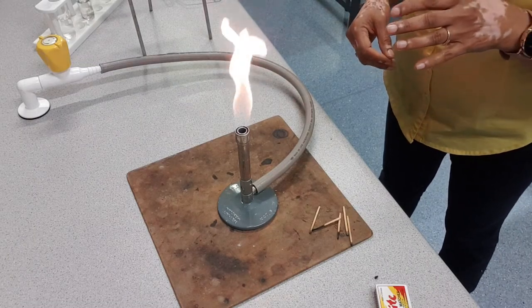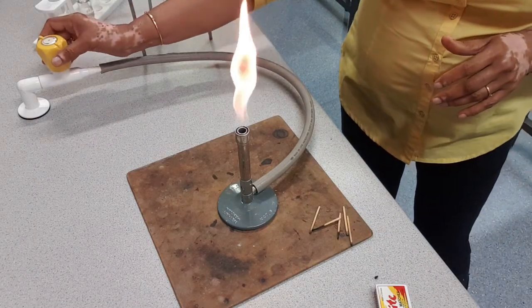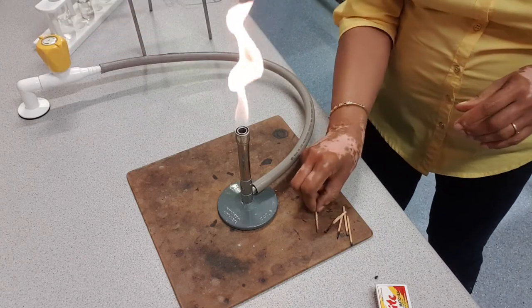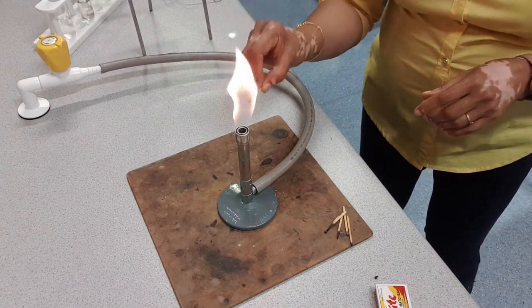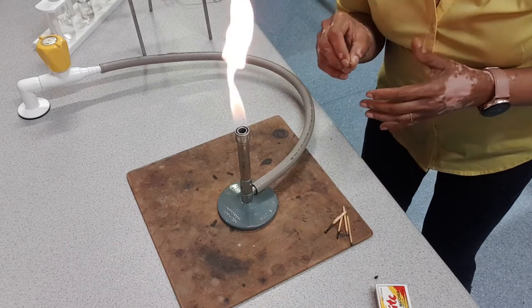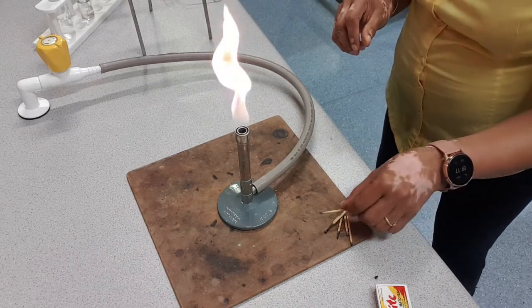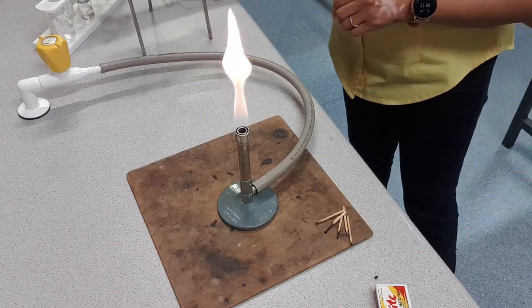If the flame is really big, you can adjust the gas tap. Notice there are two parts of the flame: the inner cone and the outer cone.